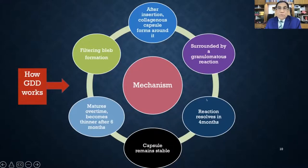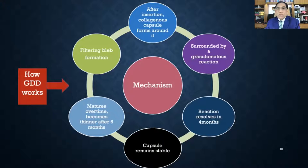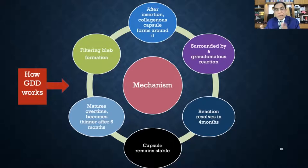After implantation, a collagenous capsule forms around the plate of both valved and non-valved devices. A granulomatous reaction occurs but resolves within 4 months. The capsule matures over time, usually becoming thinner after 6 months, forming a good filtering bleb. This is how IOP is decreased in both types of devices.